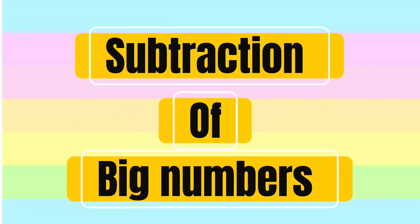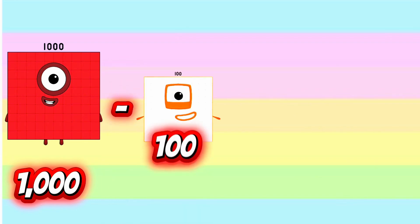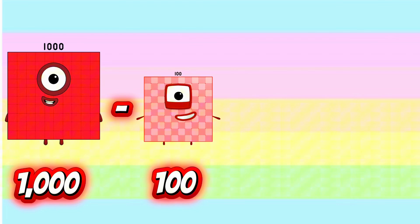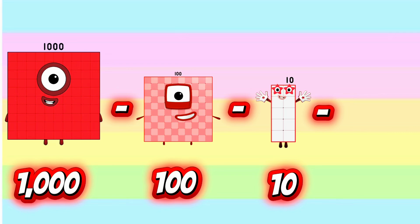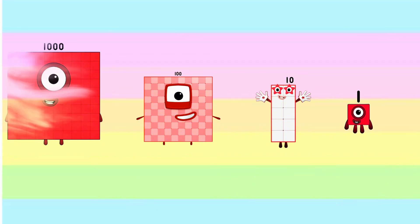Let's learn subtraction of big numbers. 1,000 minus 100 minus 10 minus 1 equals 889.